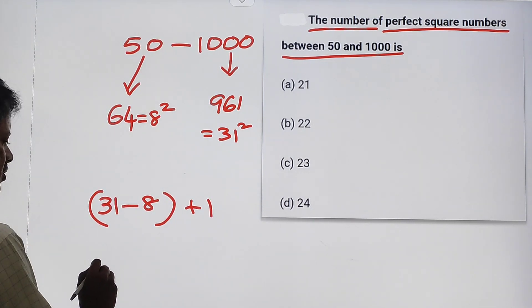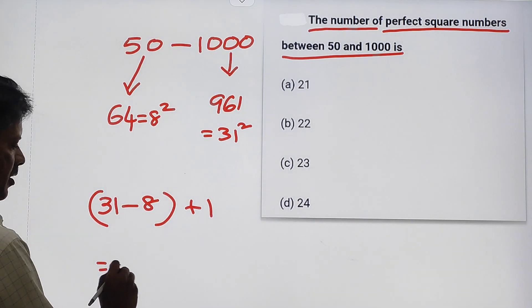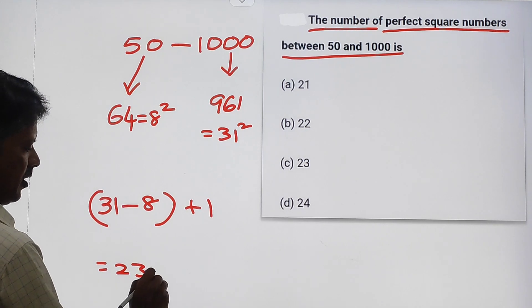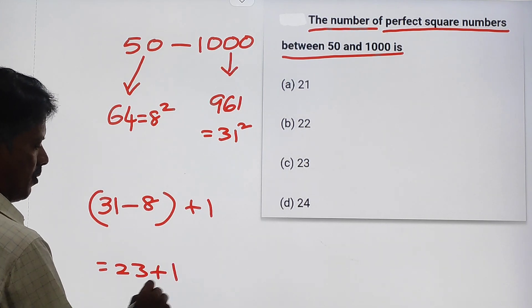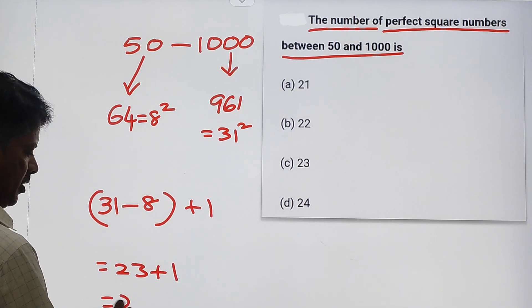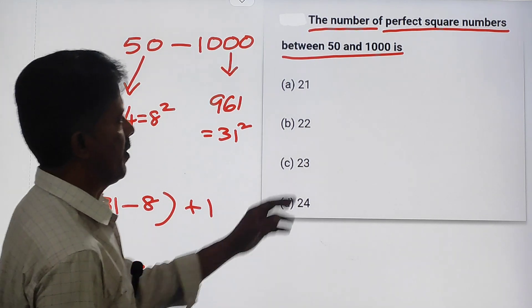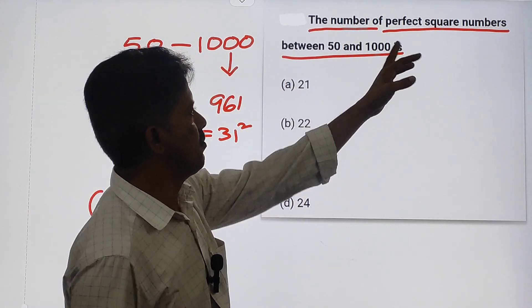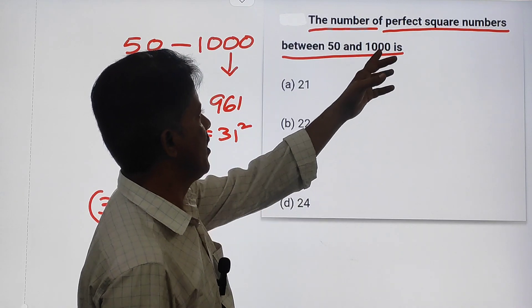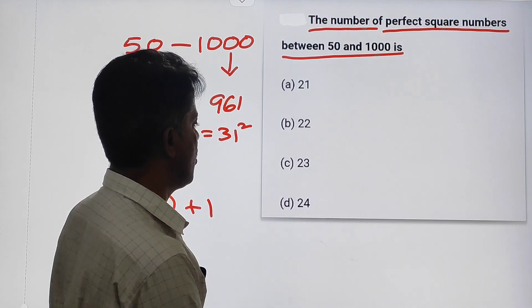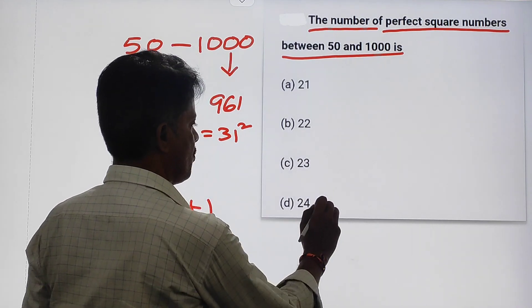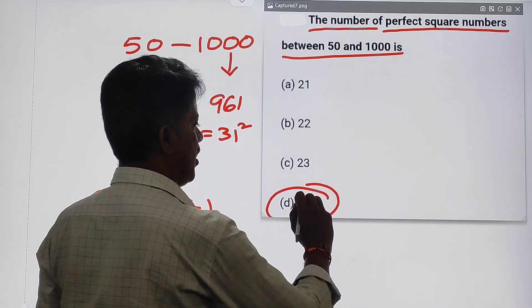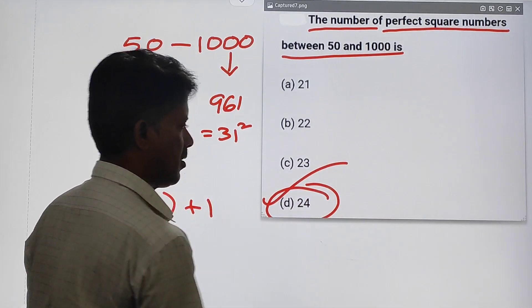31 minus 8 is 23, and 23 plus 1 is 24. So, the number of perfect square numbers between 50 and 1000 is equal to 24. Option D is the right answer.